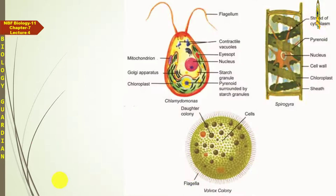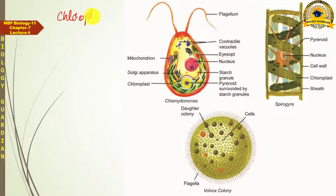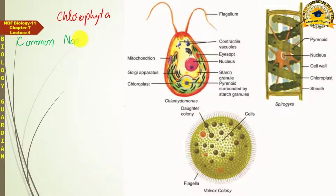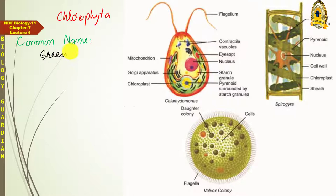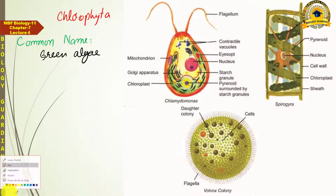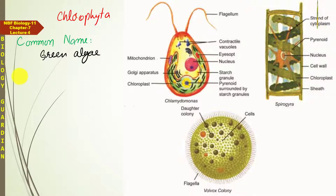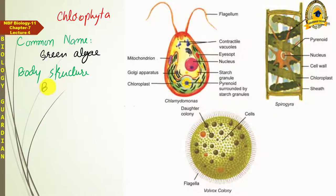Finally, Green algae, whose scientific name is Chlorophyta and common name is Green algae. Their body structure, like Rhodophyta, includes both unicellular and multicellular forms. Some are unicellular and others have multicellular body structure, so both unicellular and multicellular bodies are found in this group.